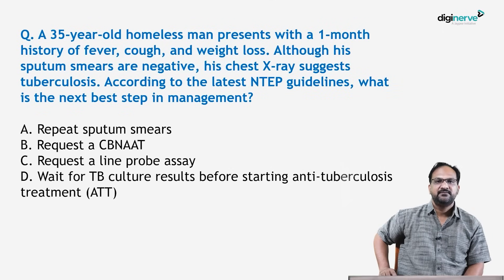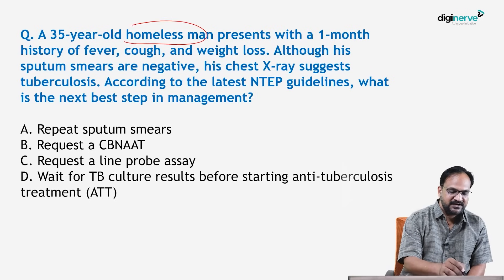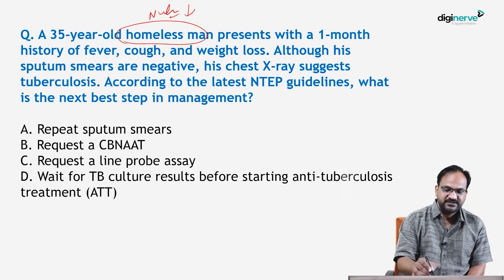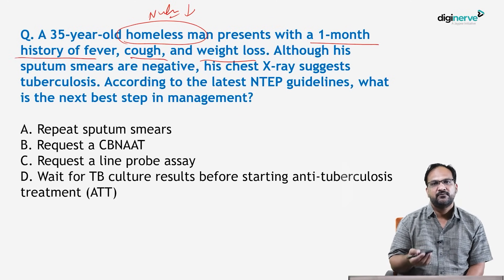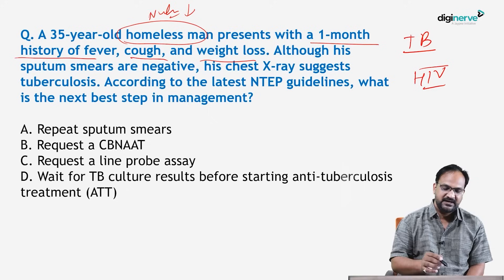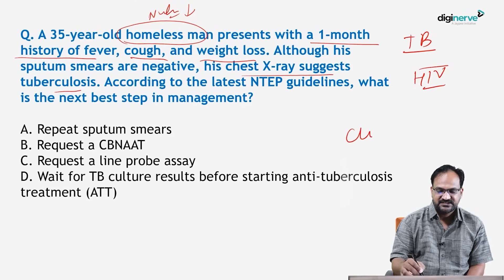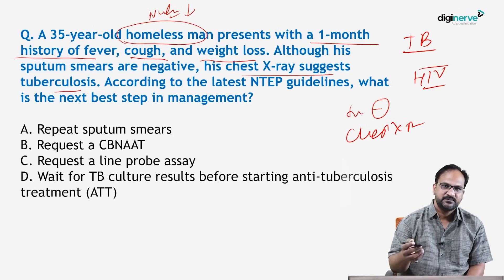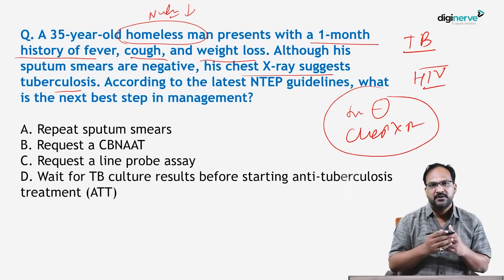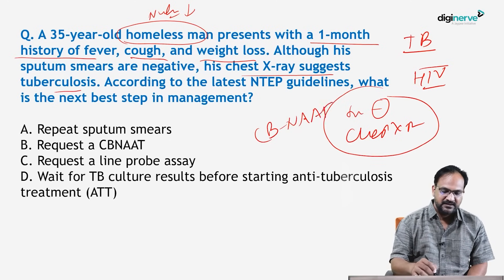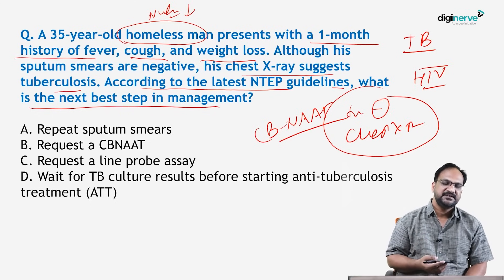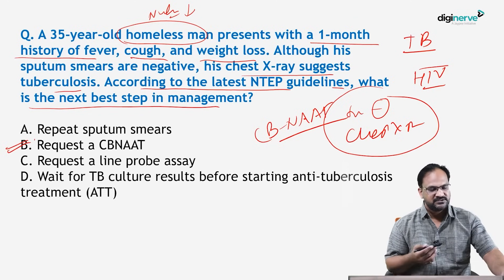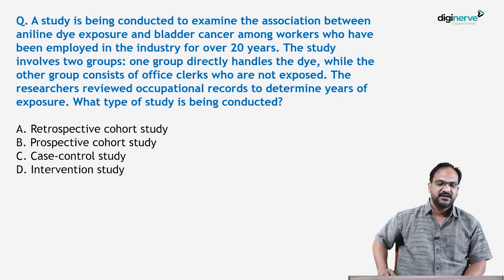Next: A 35-year-old homeless man — homelessness implies poor nutrition — presents with a one-month history of fever, cough, and weight loss. We suspect TB, and if diarrhea were included we would suspect HIV. His sputum smear is negative but his chest X-ray suggests TB. According to the latest NTP guidelines, the next best management step is to confirm the disease by CB-NAAT, and then proceed with DOTS treatment according to the result.